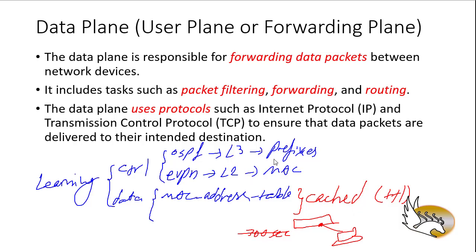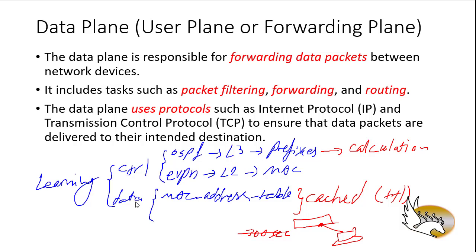In contrast, control plane learning information is permanent unless there is a new topology calculation. When a recalculation happens, it may create new results or confirm old ones, and everything is stored in the database — which remains valid unless there is a change in the network. This makes control plane learning more reliable and longer-lasting. So most of the time you prefer control plane learning, unless there is a specific reason to use data plane learning instead. That covers control plane, management plane, and data plane.